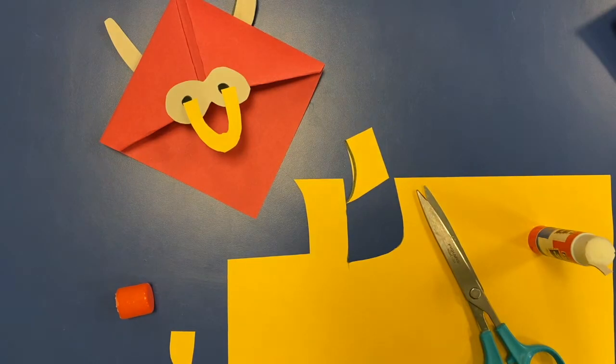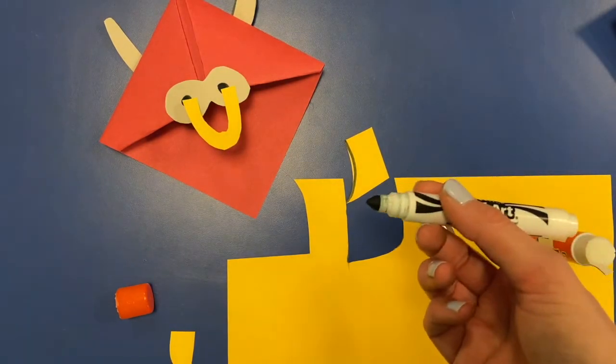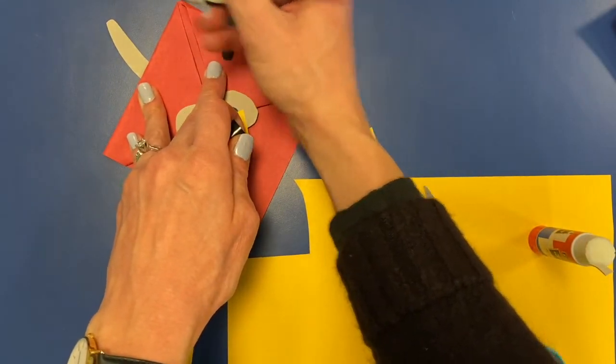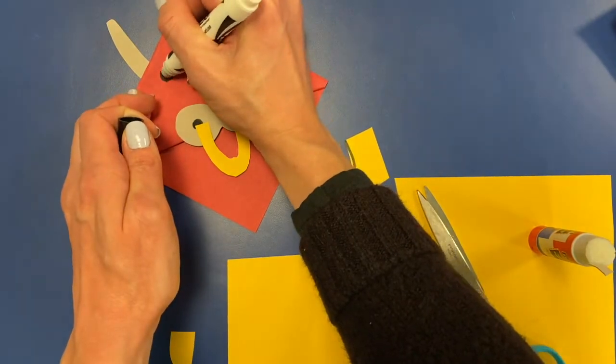Now what is he missing? He needs eyes. So we're gonna get our black marker out again and we're gonna draw two eyes right here.